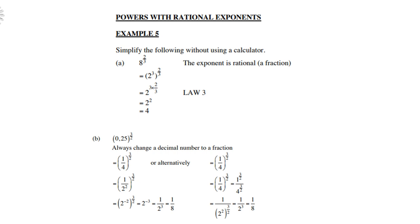Look at the second example: a decimal 0.25. We are going to change this into a common fraction instead. It's 25 over 100 because there are two digits after the decimal comma, so that gives you 100. So 25 over 100 is a quarter.